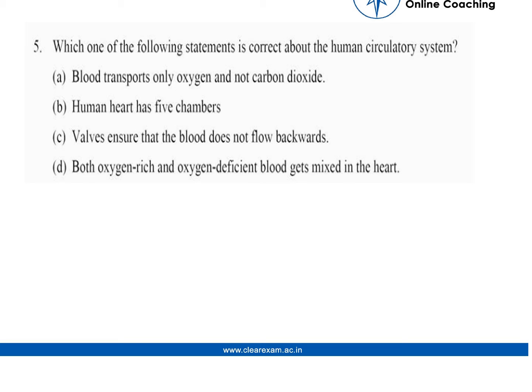The question is: which one of the following statements is correct about the human circulatory system? We have four options and must select the correct statement. The first statement is: blood transports only oxygen and not carbon dioxide. This is false, as blood transports both oxygen and carbon dioxide.